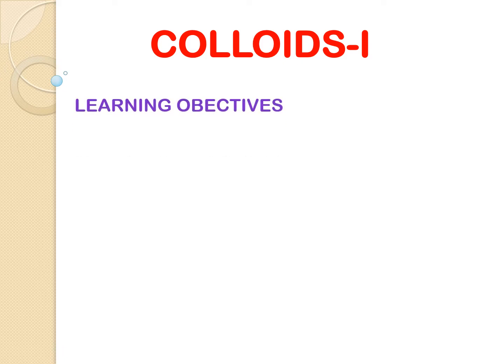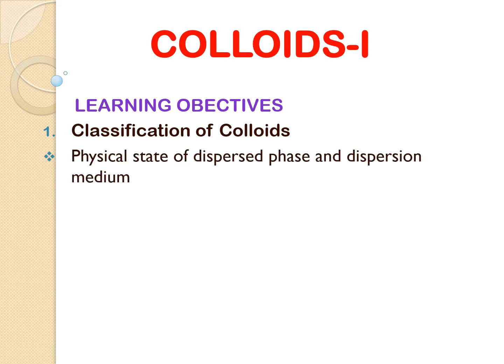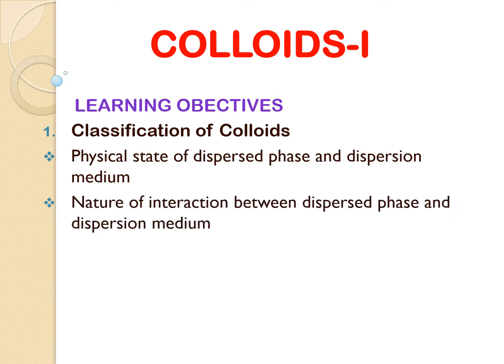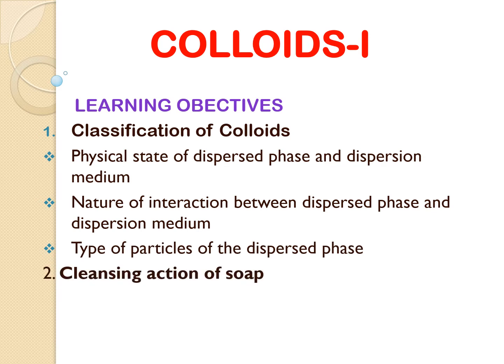We will study colloids in two parts: Colloid 1 and Colloid 2. The learning objectives for Colloids 1 are: classification of colloids on the basis of physical state of dispersed phase and dispersion medium, nature of interaction between dispersed phase and dispersion medium, types of particles of the dispersed phase, cleansing action of soap, and emulsion.